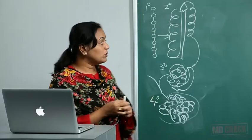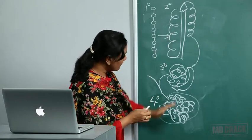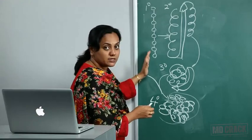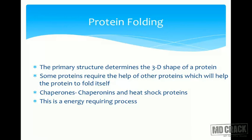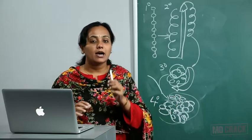It is the primary structure which determines the three-dimensional shape of a protein. Some proteins require the help of other proteins to fold correctly — these are called chaperones. Certain chaperones are called chaperonins, also known as heat shock proteins. The folding of proteins is an energy-requiring process.